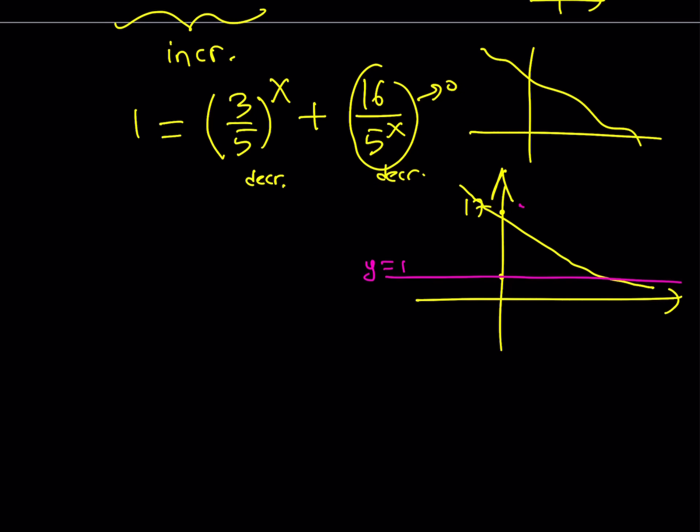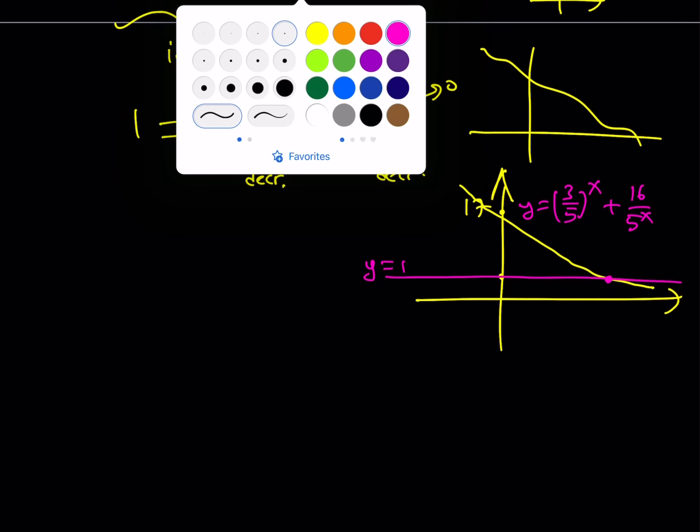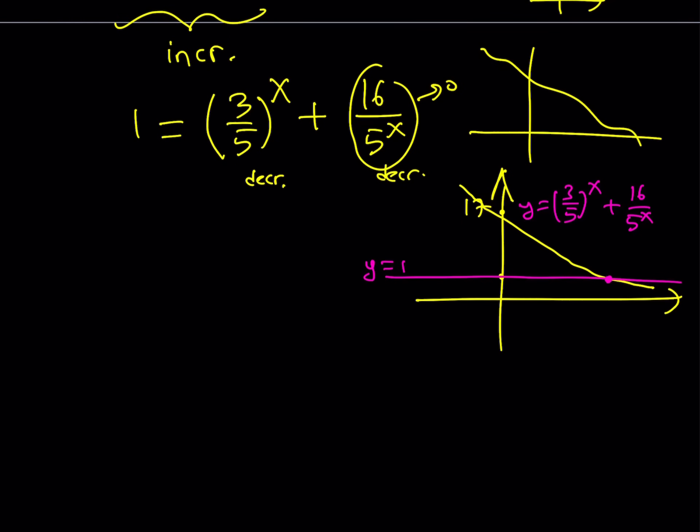This is y equals 3 over 5 to the power x plus 16 over 5 to the power x. And they will intersect at one point only. That's the whole point. So now, what is that supposed to mean? It means that there's only one solution to this equation.